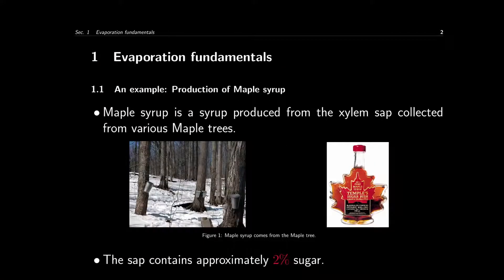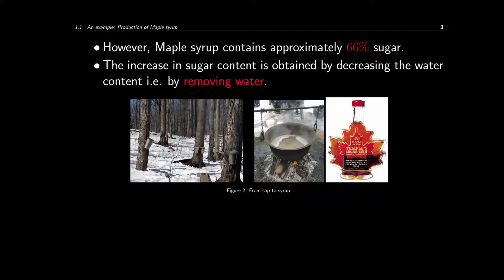Now let's look at a simple example. Maple syrup is produced from the sap that's obtained from different maple trees. The sap contains approximately 2% sugar. However, the maple syrup that we use contains approximately 66% sugar. How do we change this 2% sugar to 66% sugar? This is done by removing the water from the sap. So this is just a household type maple syrup production example — if you get the sap and remove water, you end up getting the maple syrup.